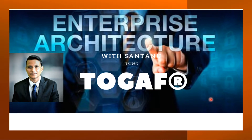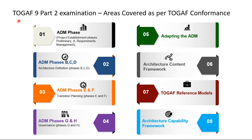How I have configured this course: first I will tell you about the TOGAF Part 2 examination and what is covered in that examination. The Part 2 examination has been classified into eight different sections. The first section talks about the ADM phases. The second section talks about B, C, D — that is Business Architecture, Information Architecture, and Technology Architecture. The third level talks about E and F — Opportunity and Solutions and Migration Planning — and phases G and H are about Governance and Architecture Change Management. Adapting the ADM is another key thing, along with the Architecture Content Framework, the TOGAF Reference Model, and Architecture Capability Framework.